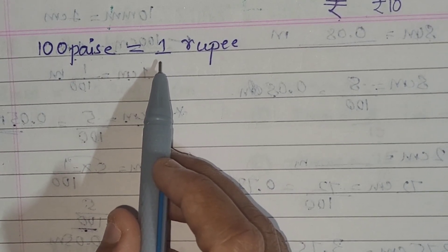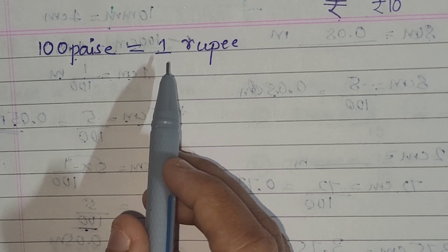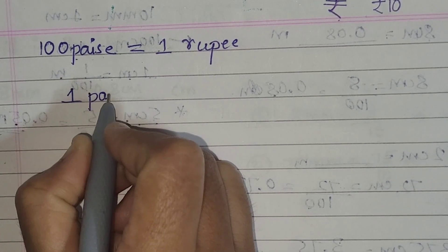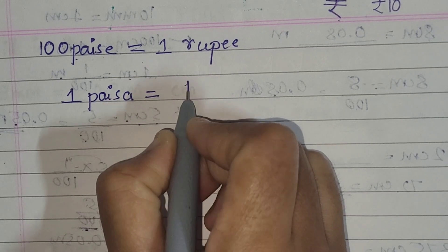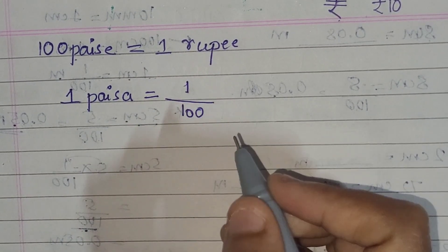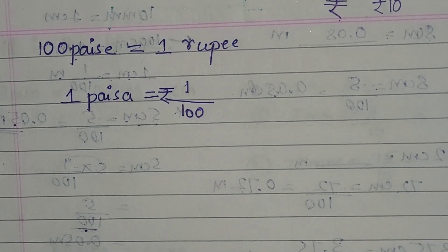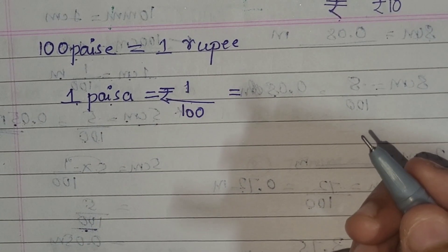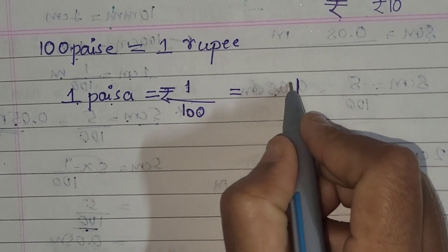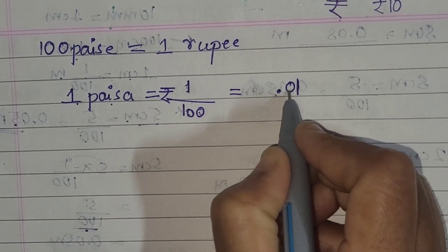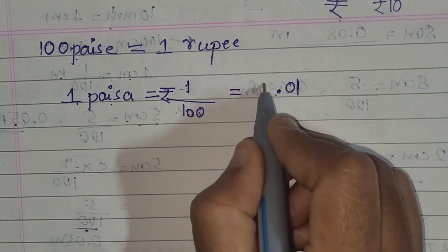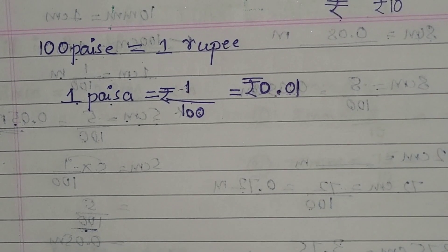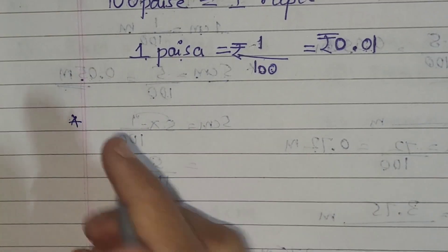So 1 paisa is equal to 1/100 of a rupee. This is the sign we use for rupee. So 1 paisa is equal to 1/100 of a rupee. We are going to write it in decimal form. Since there are two zeros in 100, we put the decimal point after two digits. Since we have no number before it, we place a zero, giving us 0.01 rupees.